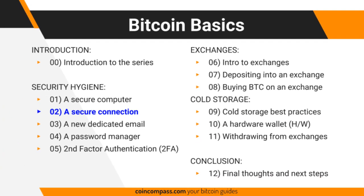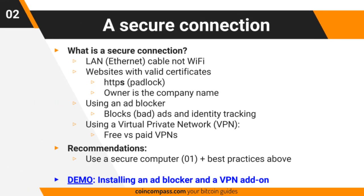This tutorial is the second in a series. If you haven't watched the first tutorial on setting up a secure computer, we highly recommend you watch that now, because you can't really have a secure connection without a secure computer and vice versa. In this demo I'm actually going to be installing an ad blocker and a VPN on Ubuntu Linux. Let's get started.